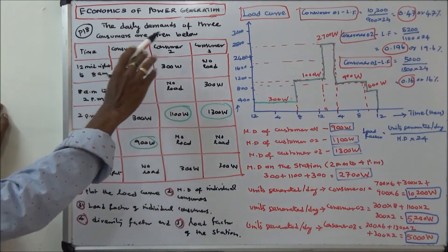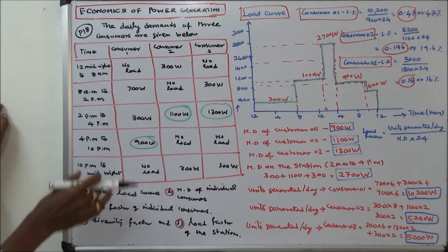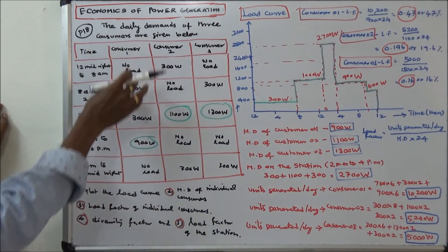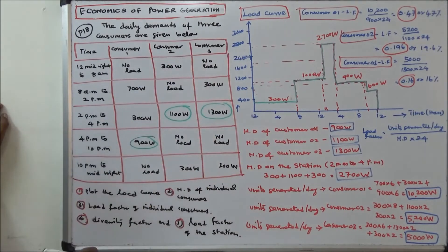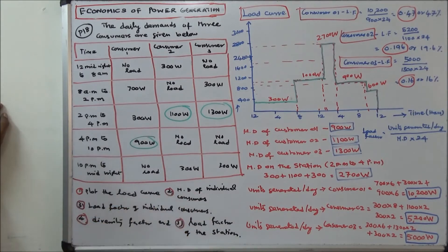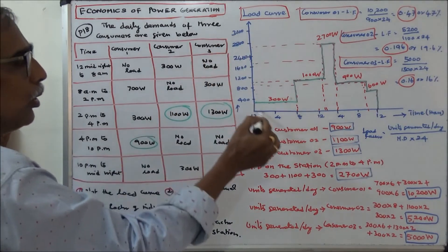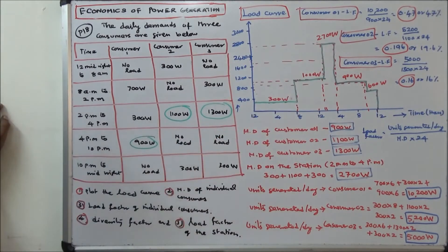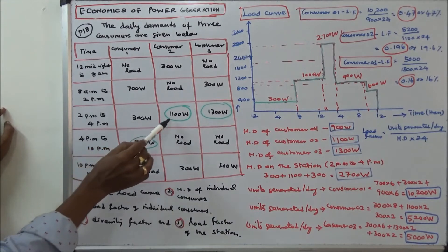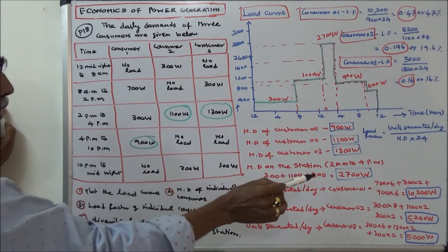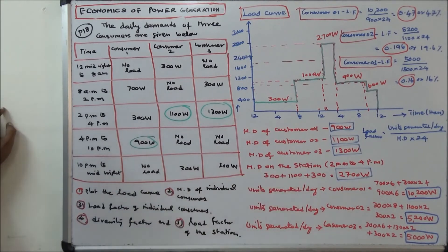Second problem: the daily demands of three consumers are given in the table. Questions: plot the load curve, find maximum demand of individual consumers, load factor of individual consumers, diversity factor, and load factor of the station. We draw the load curve. From the load curve, we find the maximum demand of the station is 2700 watts — at 2 to 4 PM: 300 + 1000 + 1300 = 2700.